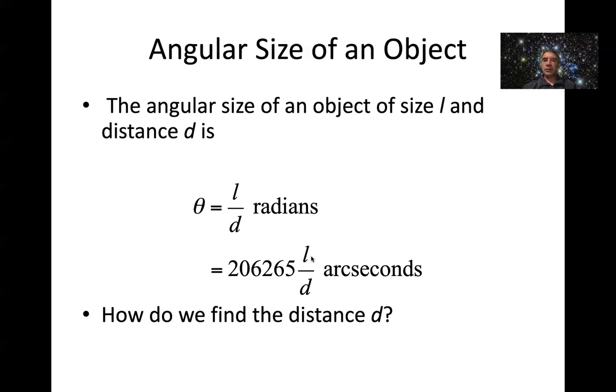So say we're trying to estimate the angular size of an object on the sky, whether it's a star or whatever. If we had an estimate of how big we thought it was, the physical size L, we're going to need the distance. So how do we find the distance to anything in astronomy?